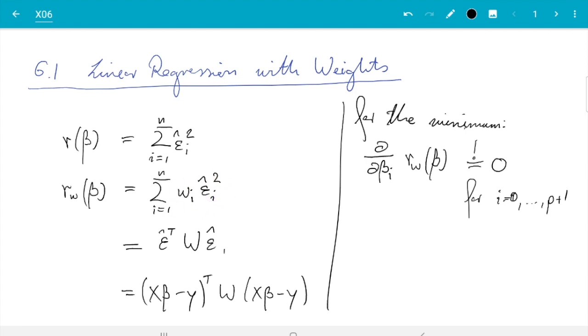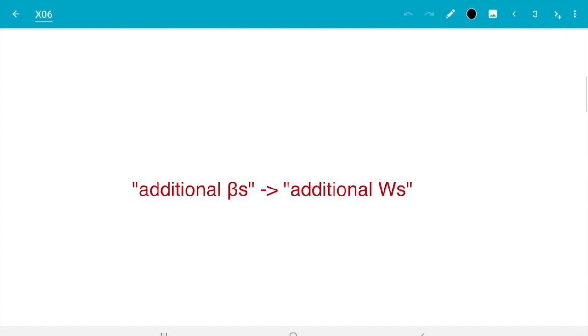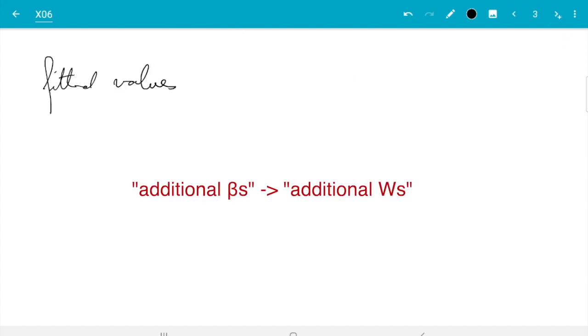But it is still a regression line. So all the other formulas don't grow additional βs. Fitted values are still Xβ̂, so there is no W here. We just computed β̂ in a different way, but we use the same model.